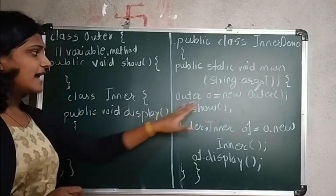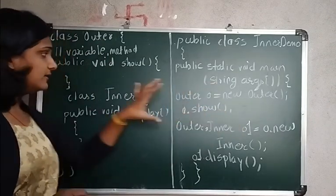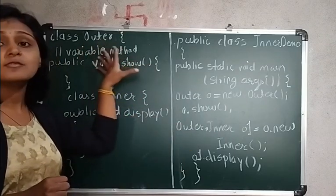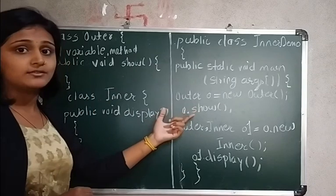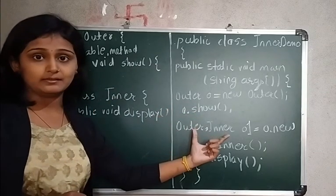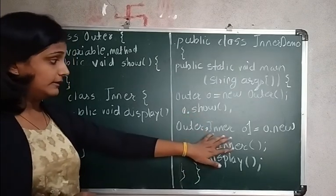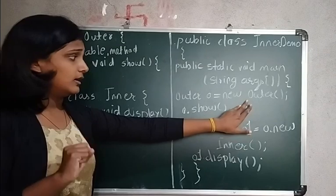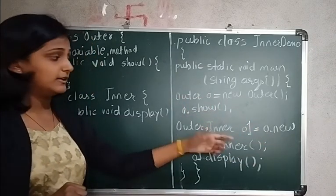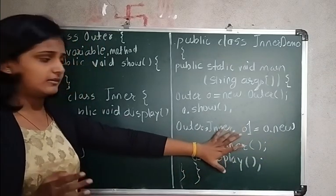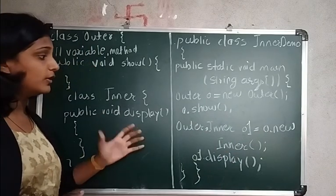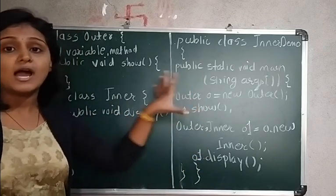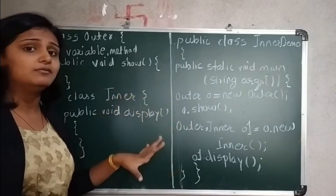Since the inner class is inside the outer class, to call the inner class's display method we need to use the reference of the outer class. So we write: Outer.Inner i = o.new Inner(). This creates an object of the inner class using the outer class object 'o'. Then we call i.display(). This is how we call methods of an inner class.